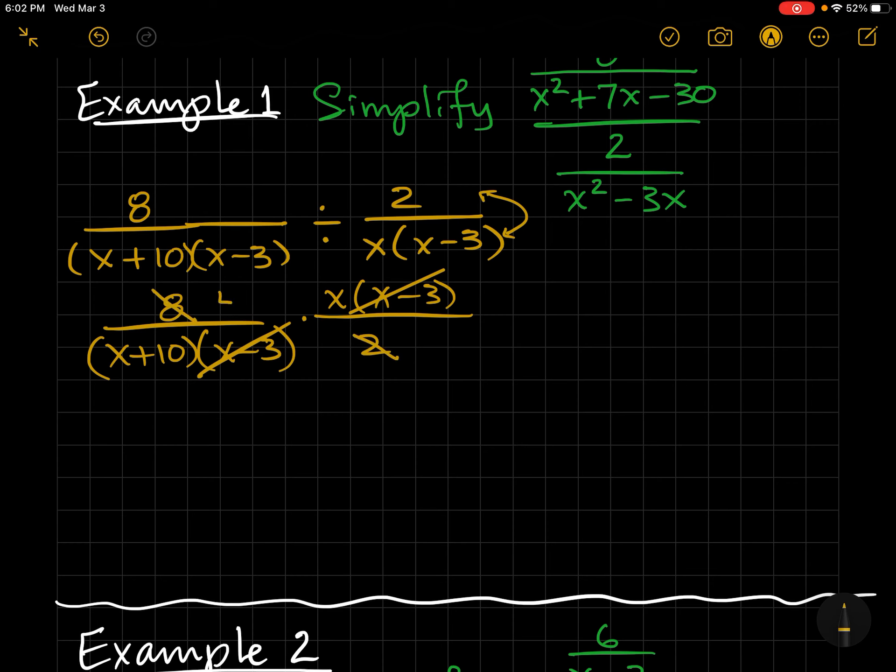Mush it together and then you're going to go ahead and start slashing. What else can I do? 2 goes into 8 four times and I think that's all I can do. So I'm left with 4x on top and x plus 10 on the bottom. Because of that addition, I cannot cancel those x's. I'm done.